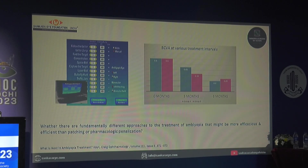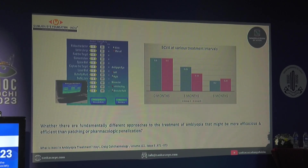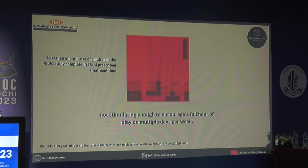Early work with vision therapy used a system called the Home Therapy System, imported from the US. It had multiple activities and we saw improvement as early as three months. Our fundamental question was whether there was a more effective and efficient way to treat amblyopia than patching or drugs.